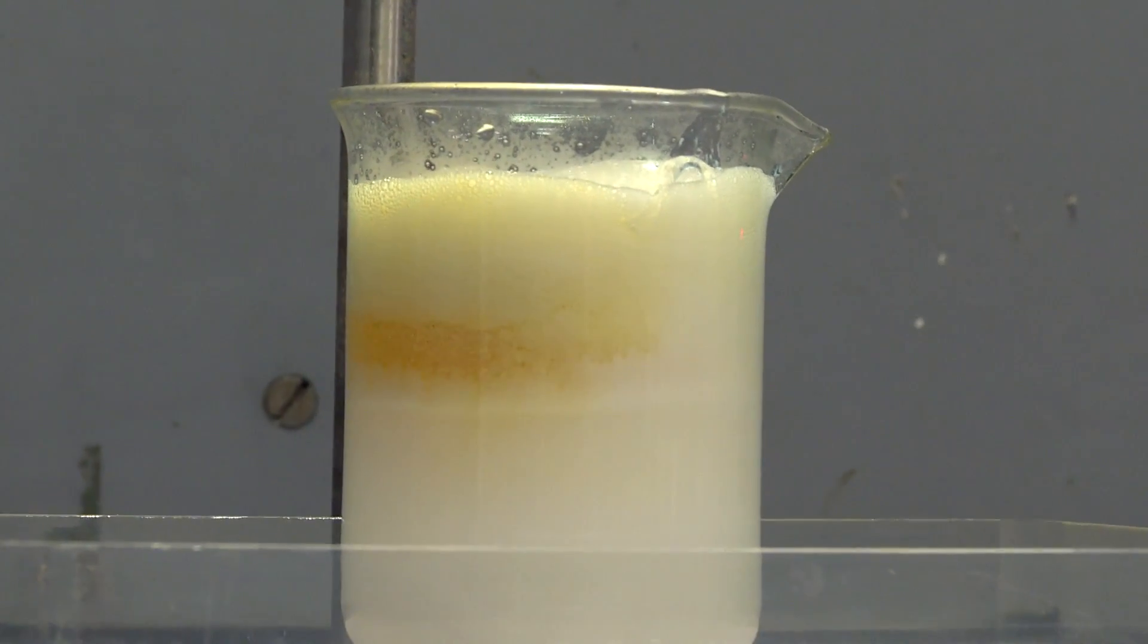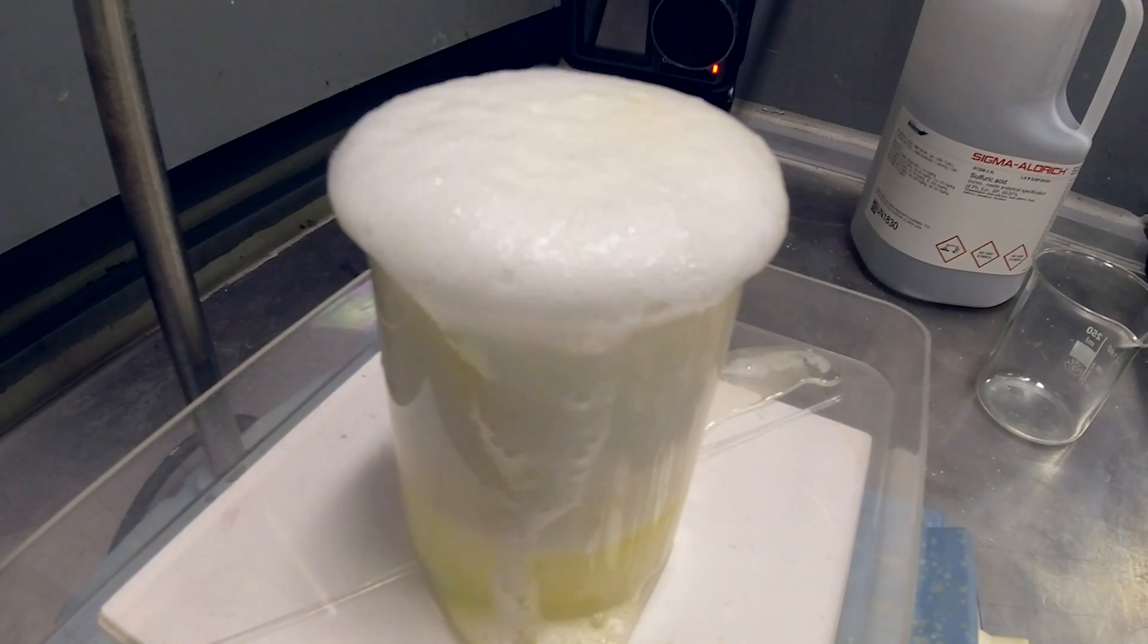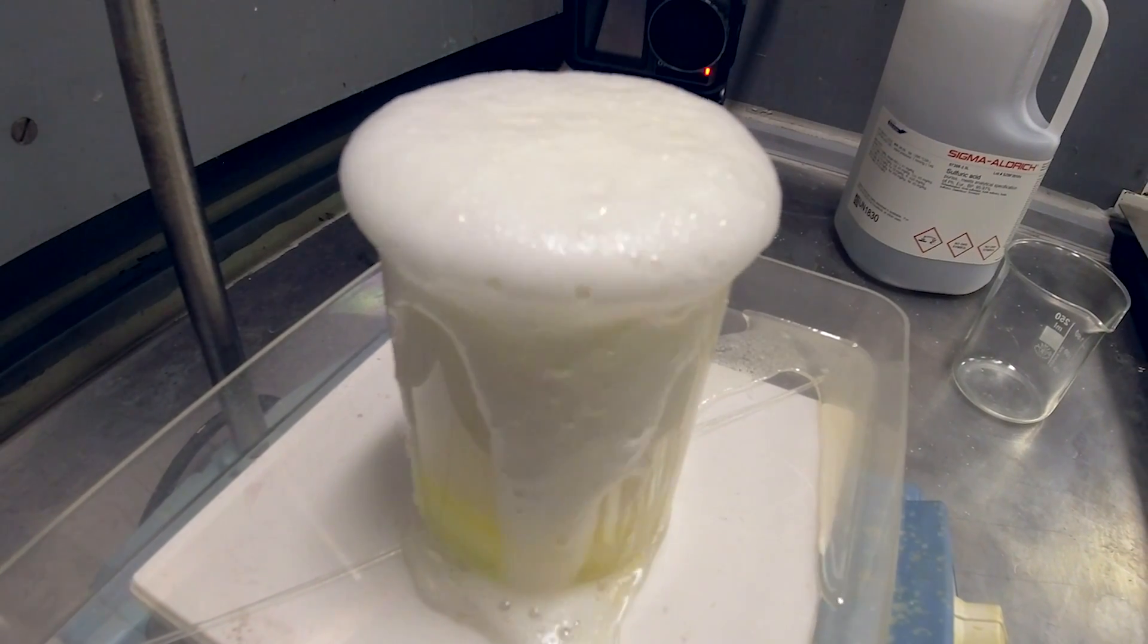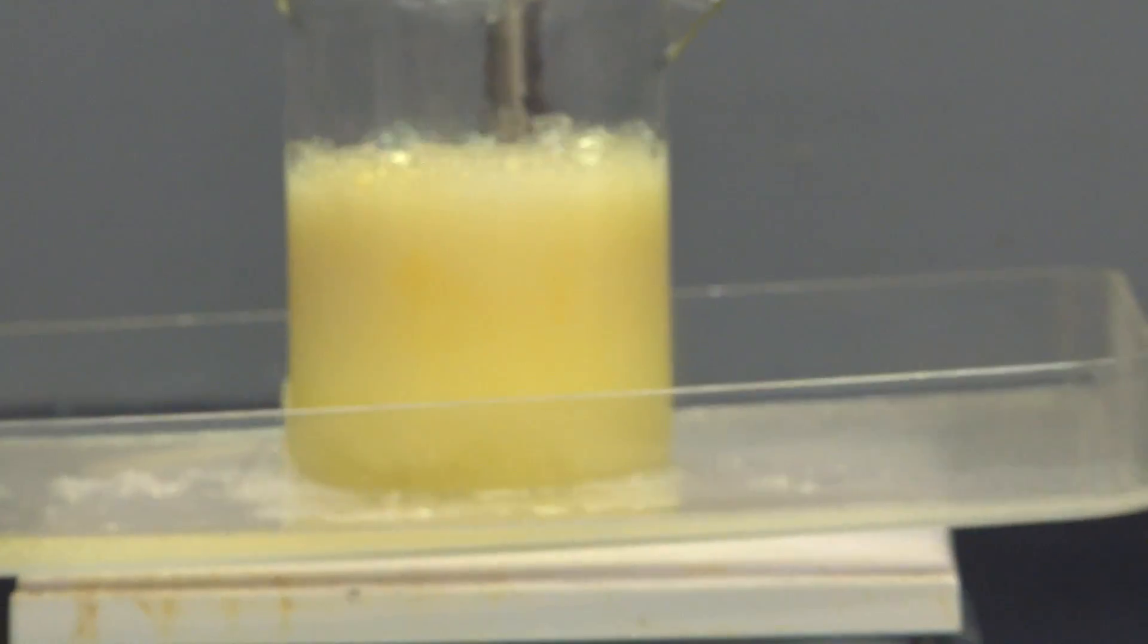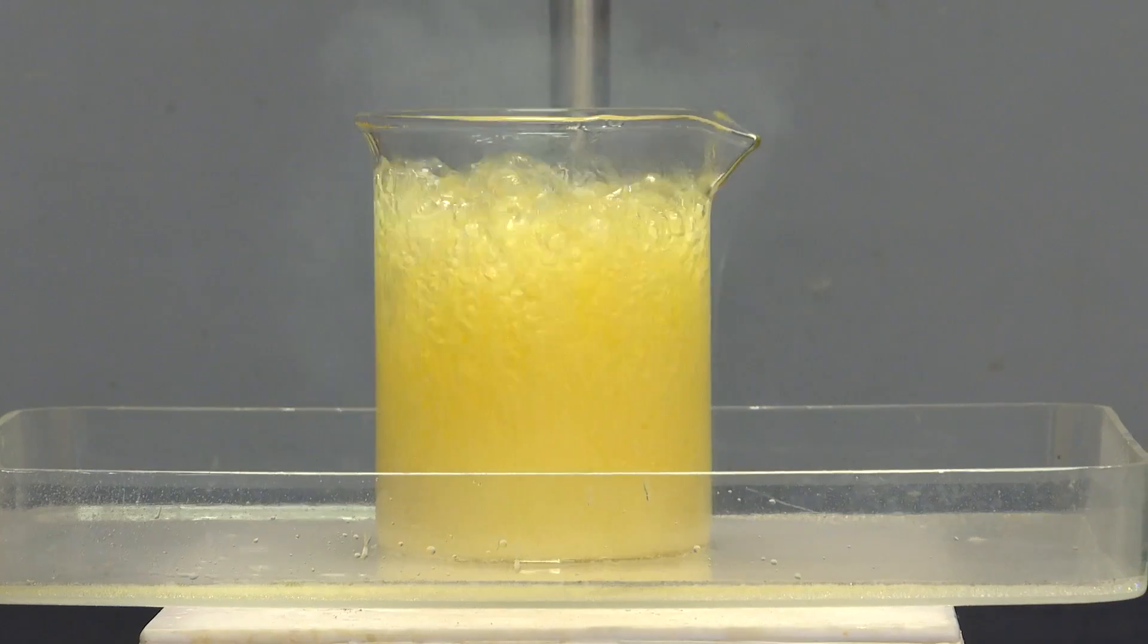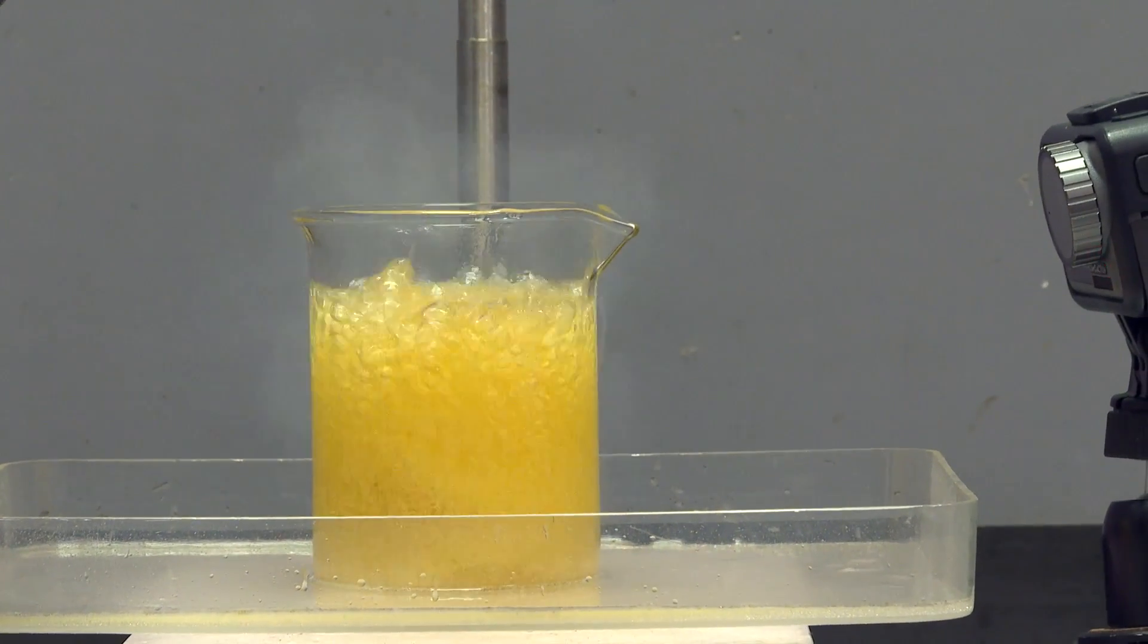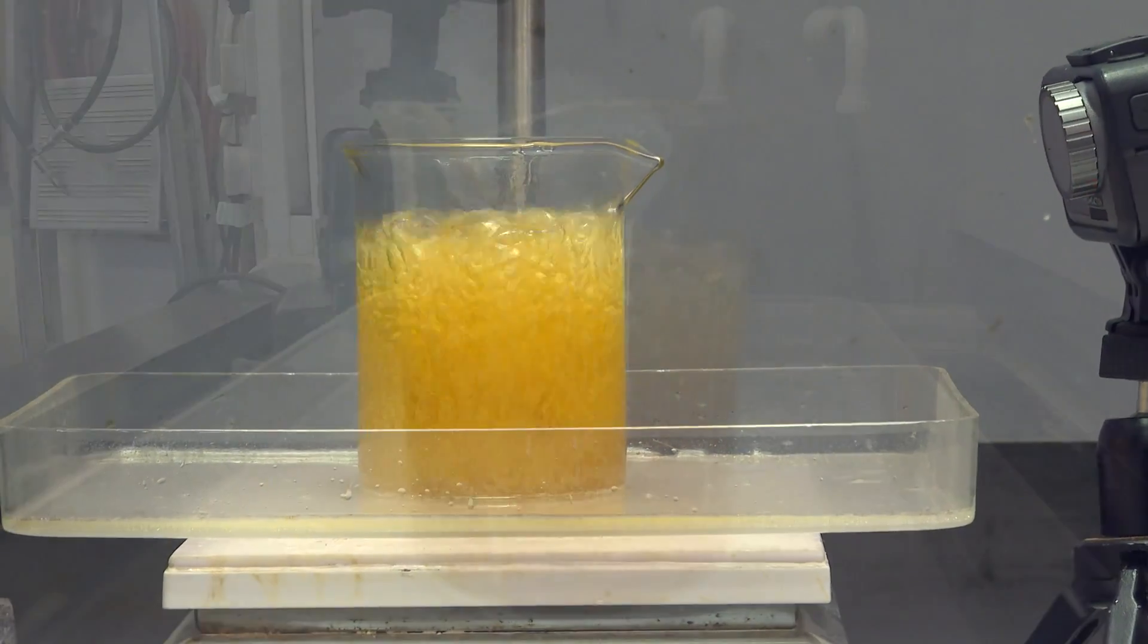This is definitely going to blow the top. First of all, the egg white frothed up with the oxygen and it started to spill over. And then everything quietened down a bit and then the reaction restarted with quite an intense brown colour, which almost certainly was the formation of finely divided carbon that we've seen before.